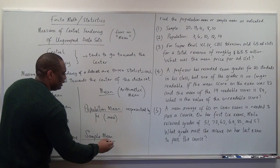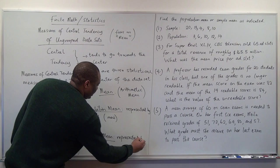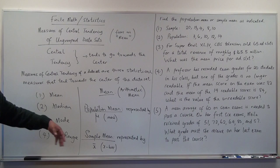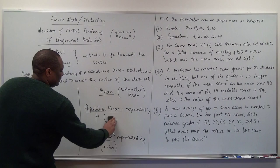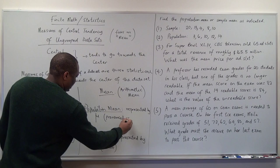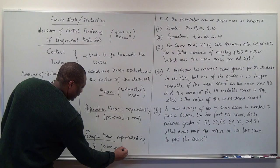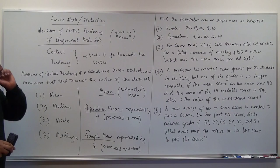The population mean is represented by mu — a Greek letter, not the letter M. The sample mean is represented by X-bar, written as X with a bar on top of it. Mu is pronounced 'myoo' and X-bar is pronounced 'X bar.'